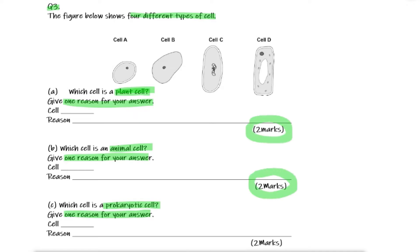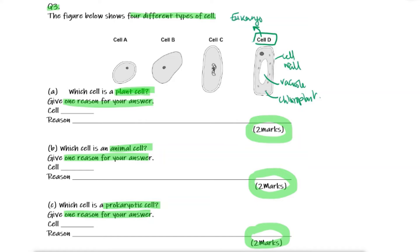Each of these is worth two marks. Let's recap — starting with cell D. Cell D has a vacuole, a cell wall, and little structures which could be chloroplasts. All of these features tell us it is a eukaryotic cell — specifically a plant cell. Another cell here has a cell wall like a plant cell, but no nucleus — and no nucleus is a big giveaway for a prokaryotic cell.